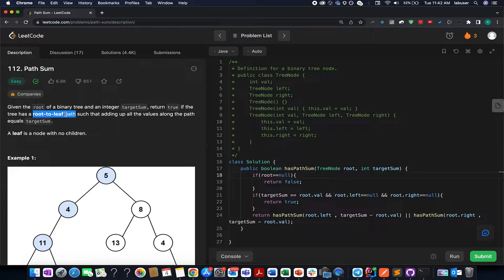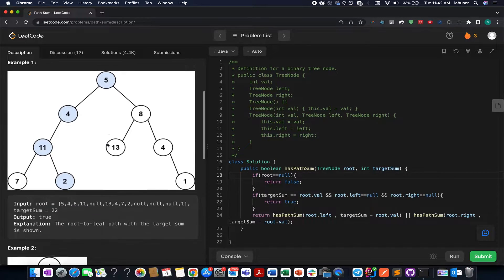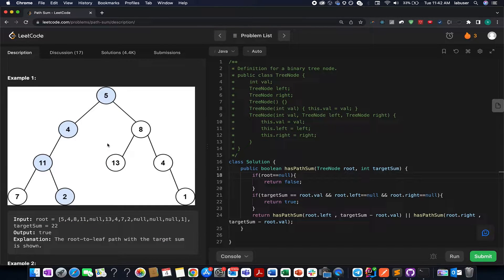If that path exists, you need to return true. If that path doesn't exist, you need to return false. Without further ado, let's quickly walk through the presentation and I will be explaining the algorithm behind it.